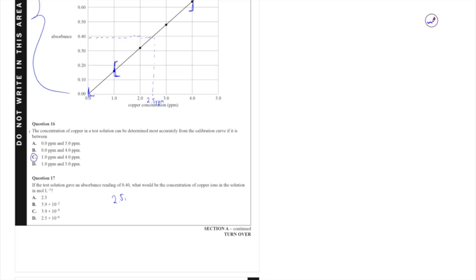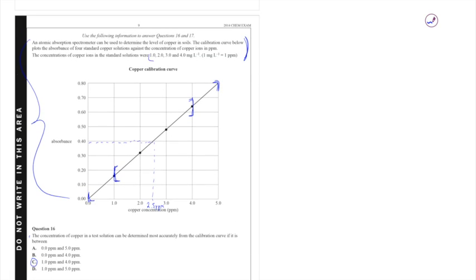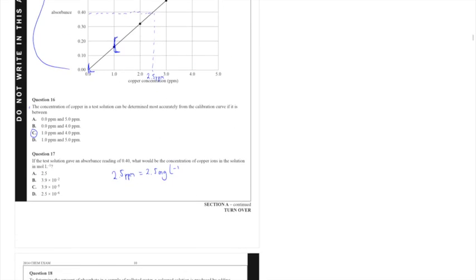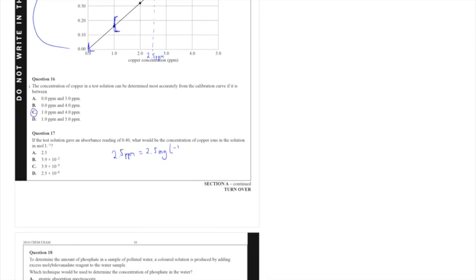So 2.5 ppm equals 2.5 milligrams per liter and that conversion is given up here if you need it. Once I've got 2.5 milligrams per liter that means I have 2.5 × 10⁻³ grams per liter. To get that into moles per liter I divide by the molar mass of copper which is 2.5 × 10⁻³ divided by 63.5 to yield 3.9 × 10⁻⁵ moles per liter. That corresponds to answer C.